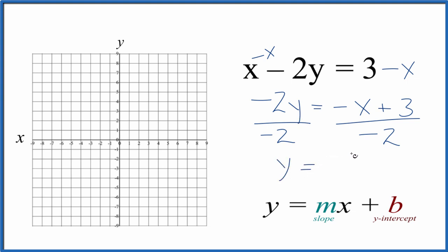Negative x over 2 is just x over 2 since the negatives cancel out. And then we have 3 over negative 2, so negative 3 over 2. So this is in slope-intercept form, a lot easier to graph.